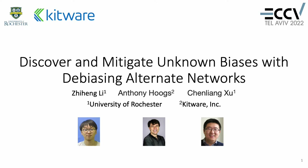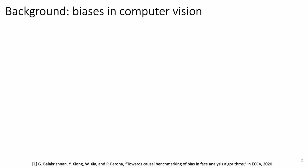Presenting our work: Discover and Mitigate Unknown Biases with Debiasing Alternate Networks. This is a joint work of Zhiheng Li, Anthony Hawkes, and Chen Liang Xu from University of Rochester and Kitware Inc.